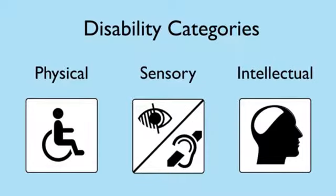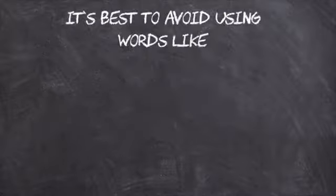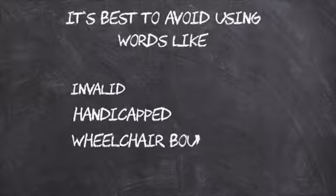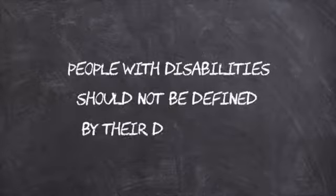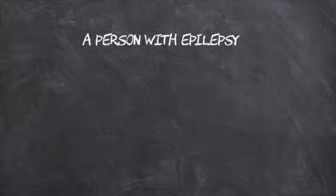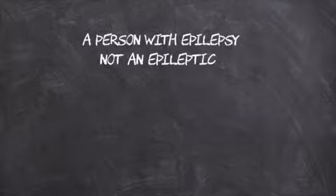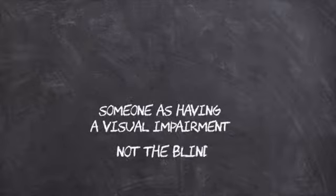To begin with, let's explore some general disability awareness tips that are good to know. The language we use around disability is very important and it's best to avoid using words like invalid, handicapped or wheelchair bound. People with disabilities should not be defined by their disabilities. For example, when referring to somebody with epilepsy it's best to say 'a person with epilepsy', not 'an epileptic', or it's best to refer to someone as having a visual impairment, not 'the blind'.